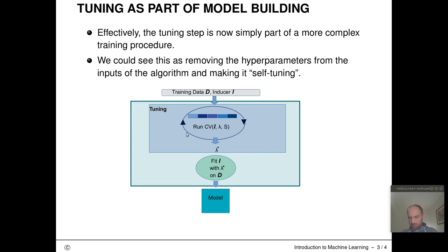returns lambda star as the optimal configuration, and then with lambda star fits the learning algorithm on the complete training data set and returns our model. And this effectively removes our hyperparameters from the inputs of our learning algorithm and makes this learning algorithm in a